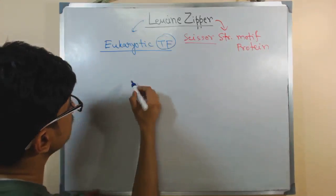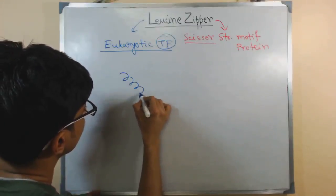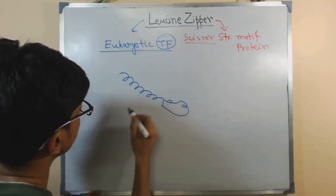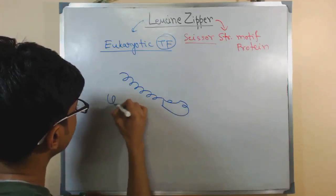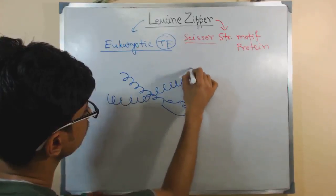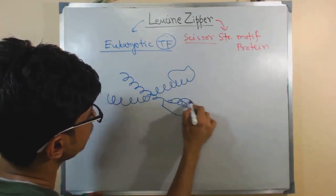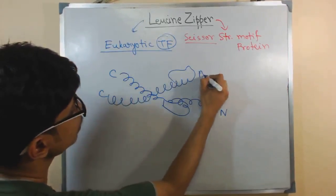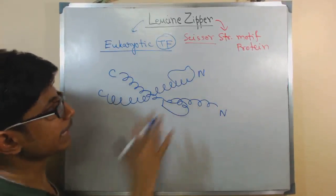Actually it looks something like this. If I draw something like this with another alpha helix, it continues something like this. This is, let's say, N-terminal, C-terminal. It looks something like this.